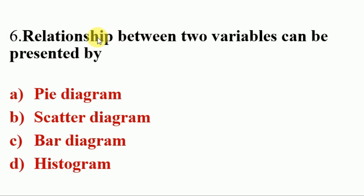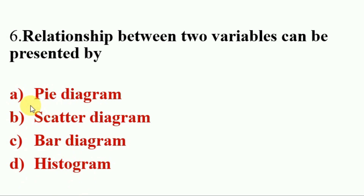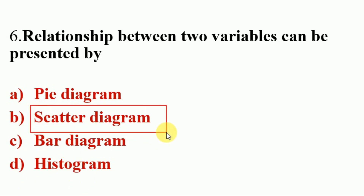Next question. Relationship between two variables can be presented by — Options A. Pie Diagram, B. Scatter Diagram, C. Bar Diagram, D. Histogram. Answer is B. Scatter Diagram. So the relationship between two variables can be presented by Scatter Diagram.